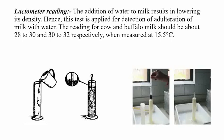The lactometer test detects addition of water to milk, which results in lowering its density. When someone adds water to milk, the density is reduced, so we apply the lactometer reading test. The reading for cow and buffalo milk should be about 28–30 and 30–32 respectively, measured at 15.5 degrees centigrade. If the reading is less than 28, there is adulteration — meaning water has been added.